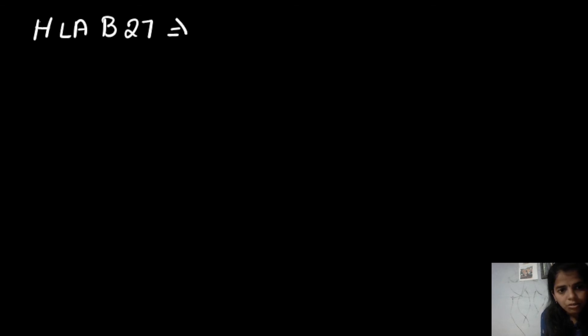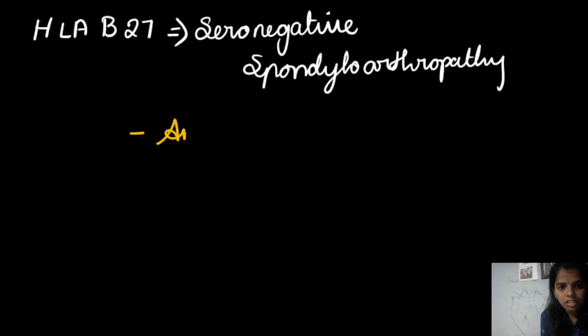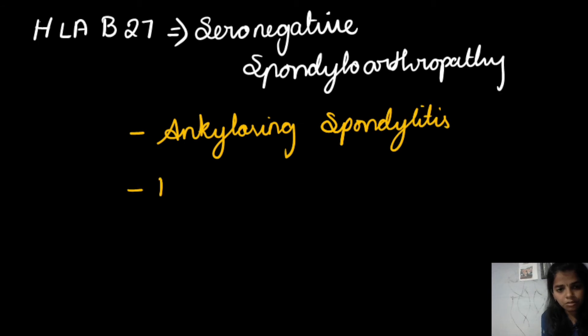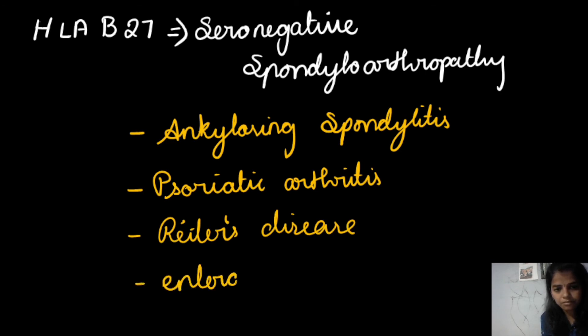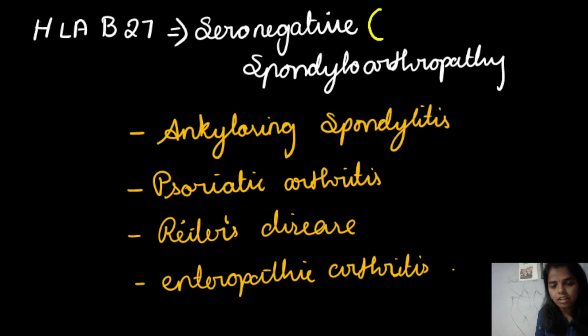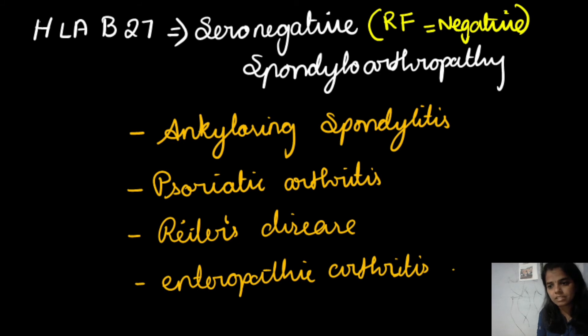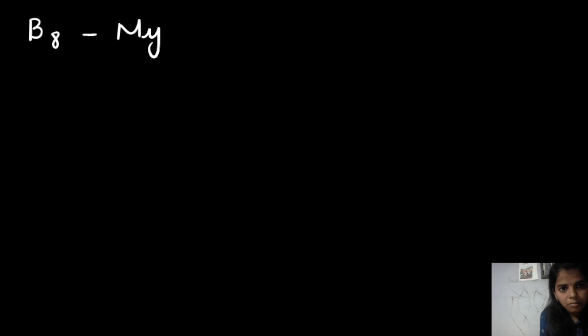For MCQ discussion: HLA-B27 is seen in seronegative spondyloarthropathies. These are called seronegative because the serum rheumatoid factor (RF) is negative in these conditions. Next, HLA-B8 is seen in myasthenia gravis.